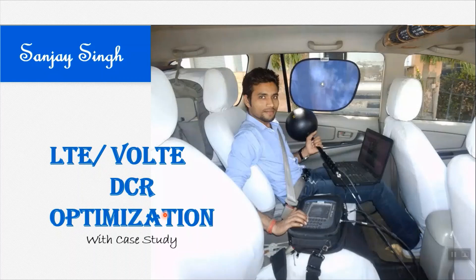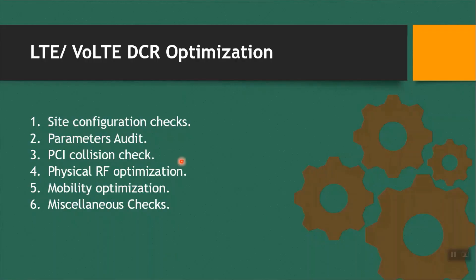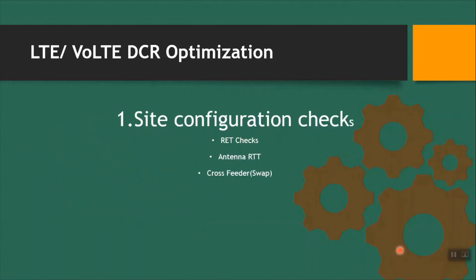In this video, I will cover some important parametric optimization through case study. To understand in detail, DCR optimization is divided into some parts, and each part contains some parameter tuning. So let's discuss one by one. To improve the drop call rate of any network, configuration check is very important. In this video, I covered the parameters that belong to Nokia equipment only.